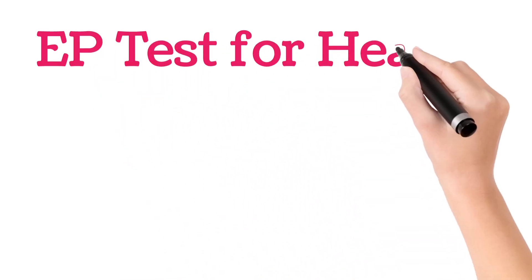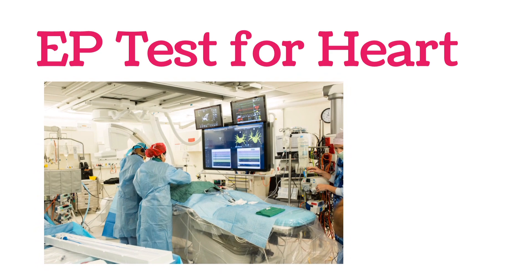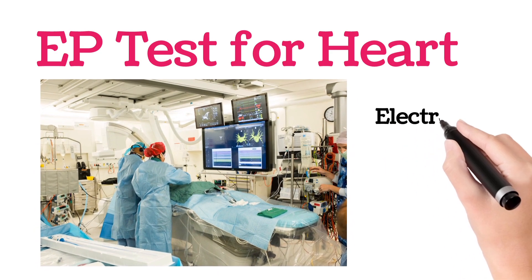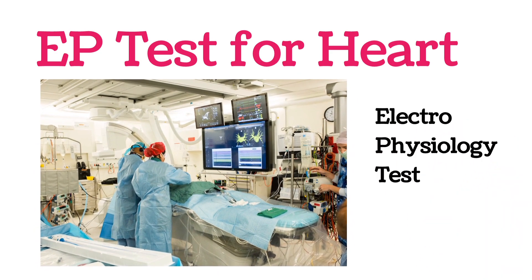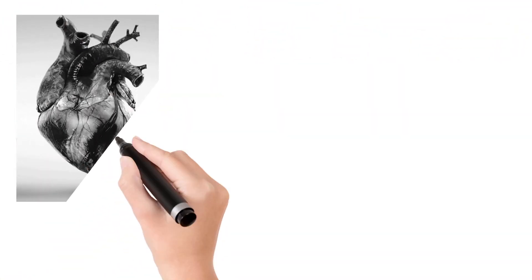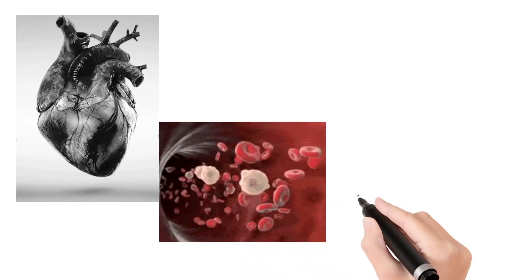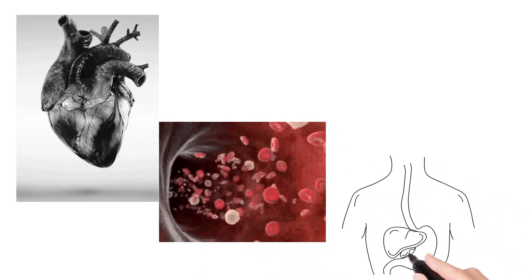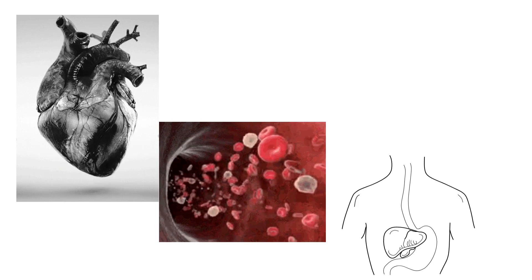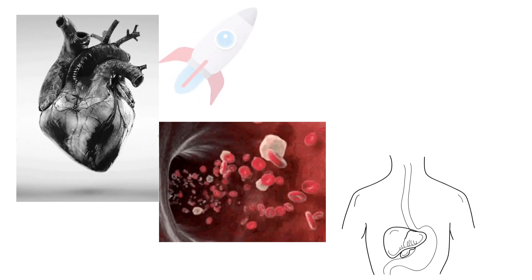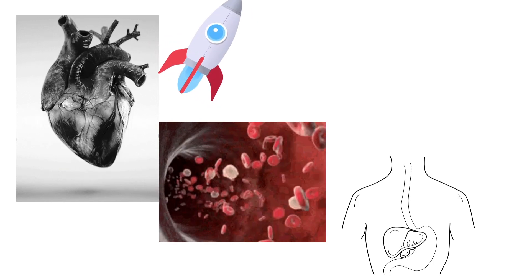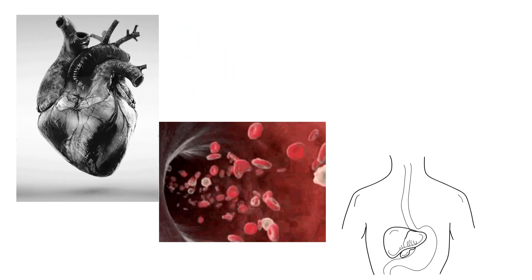Welcome to our channel. In this video I'm going to explain about the EP test. EP means electrophysiology test. This test is used to examine the heart's electrical activity. Generally, the heart pumps blood to various parts of the body, and for the heart to beat, there should be a certain electrical system which produces the signal so that the heart beats and pumps blood.